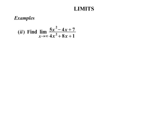Our second example: we need to find the limit as x approaches infinity of 5x squared minus 4x plus 7 on top, dividing by 4x squared plus 8x plus 1. We're going to use the result that the limit as x approaches infinity of 1 over x is equal to 0. That's a very important result we need to use.